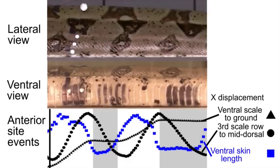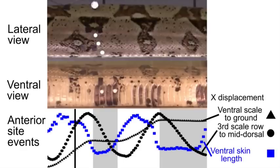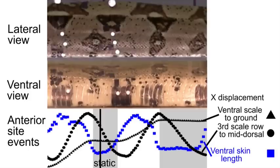The dorsal skin and the vertebra move forward with a nearly constant speed, whereas more ventrally the skin oscillates forward and backward relative to the underlying skeleton. The ventral skin periodically has static contact with the ground.